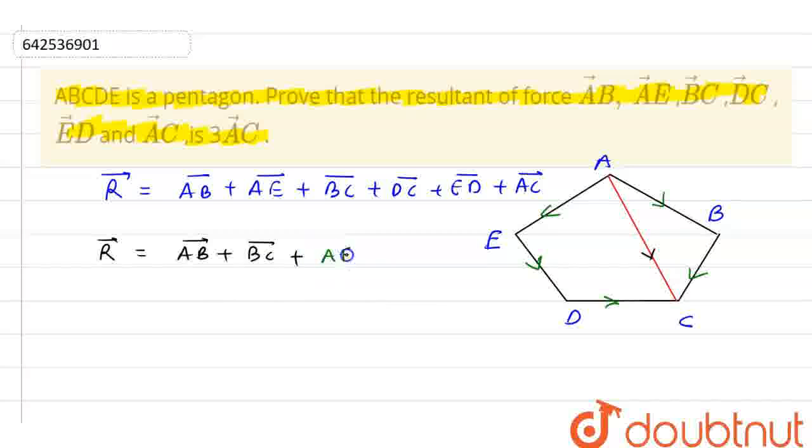So what we have: AE, ED, DC and finally we have one AC more.